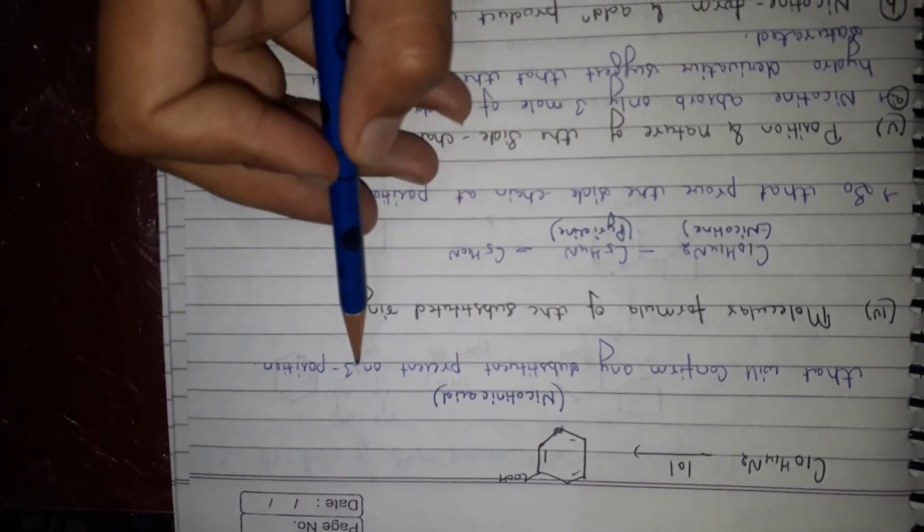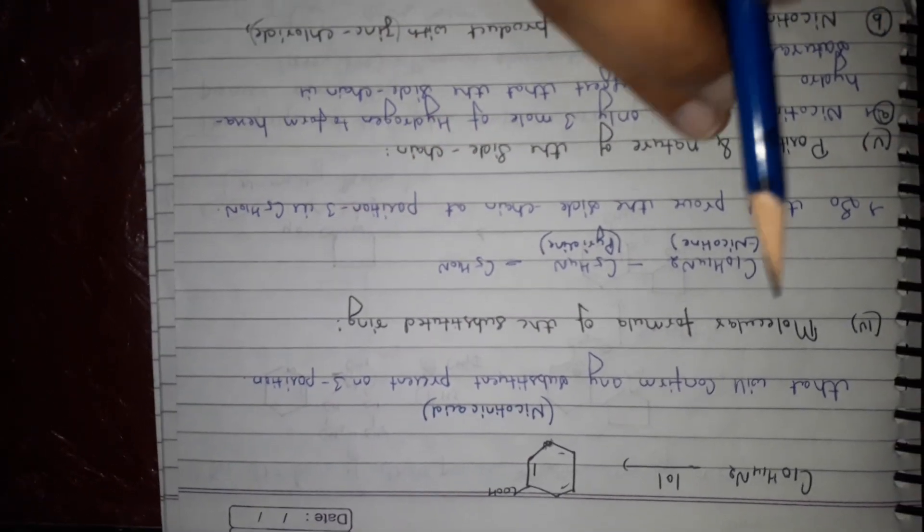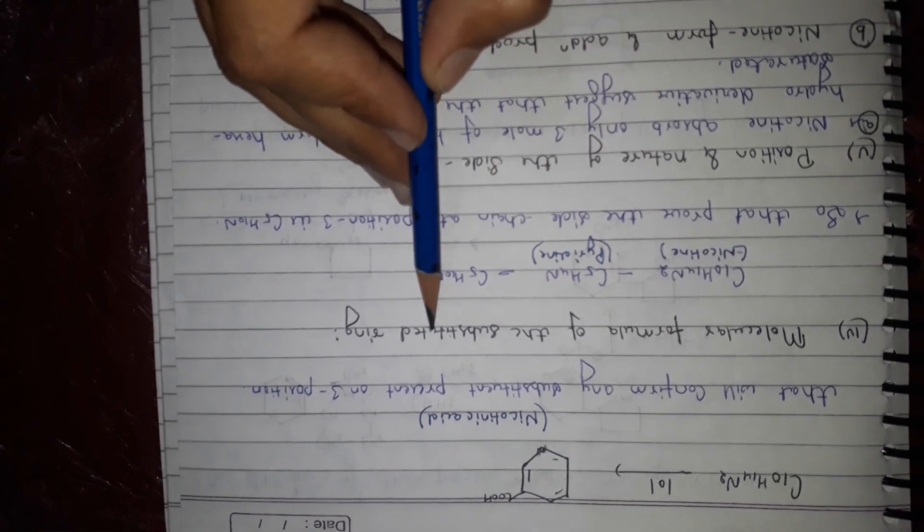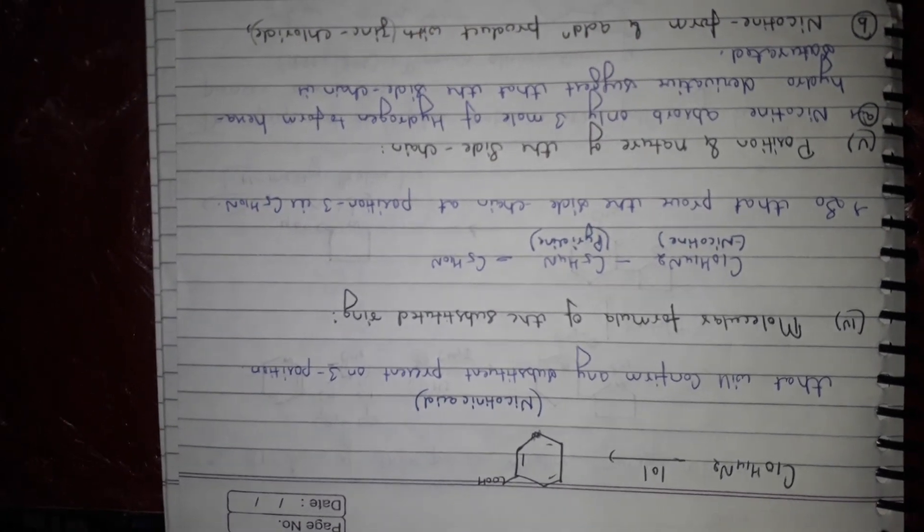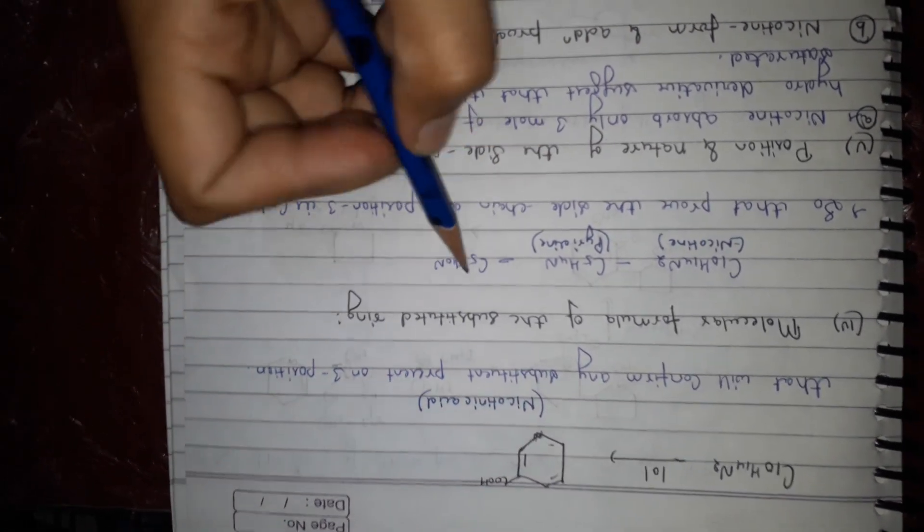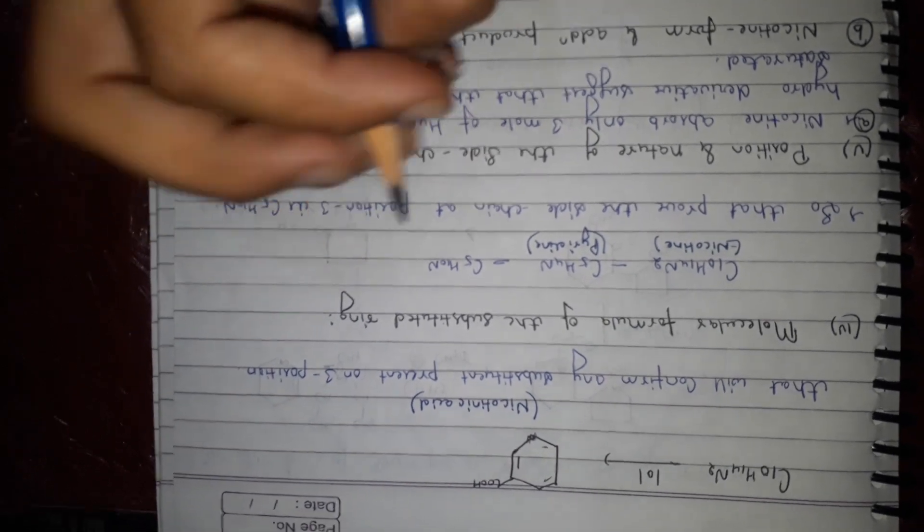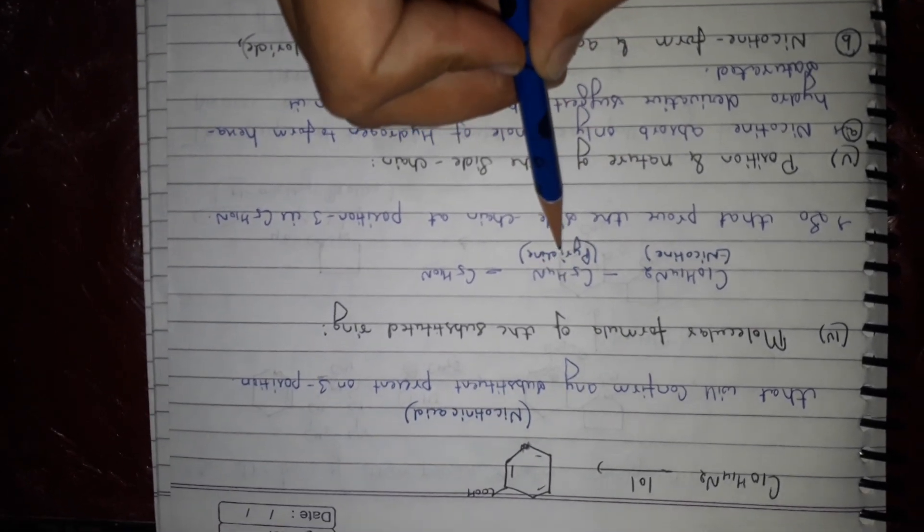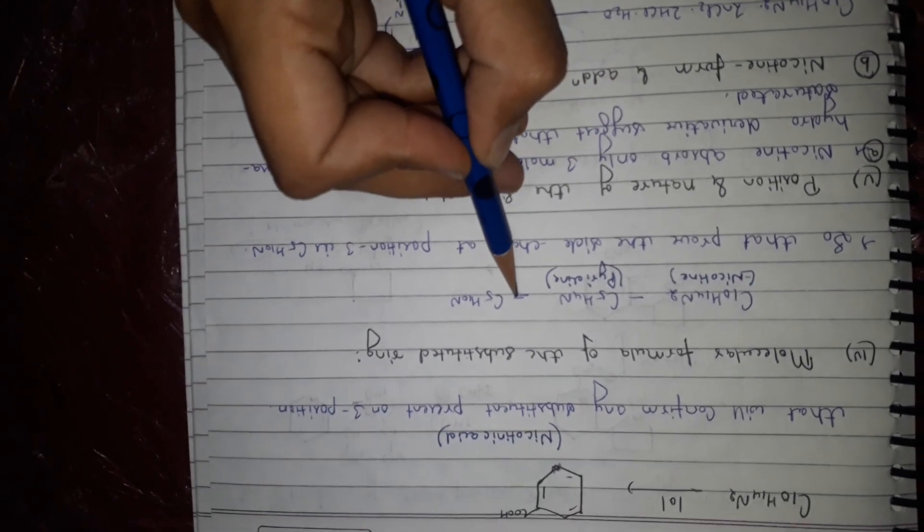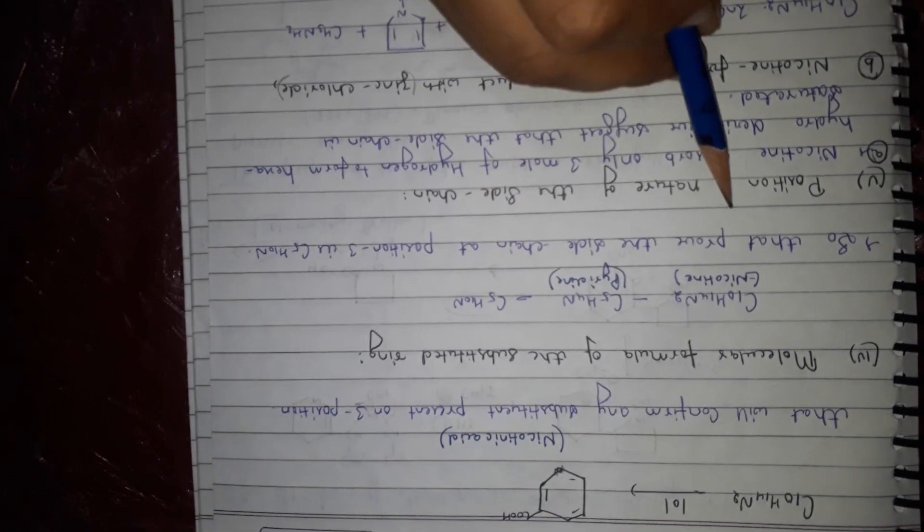Molecular formula of the substitution ring - we have to get the substitution ring molecular formula. Nicotine is pyridine first, C5H4N, and it will be C5H10N. That proves the side chain at position third is C5H10N.